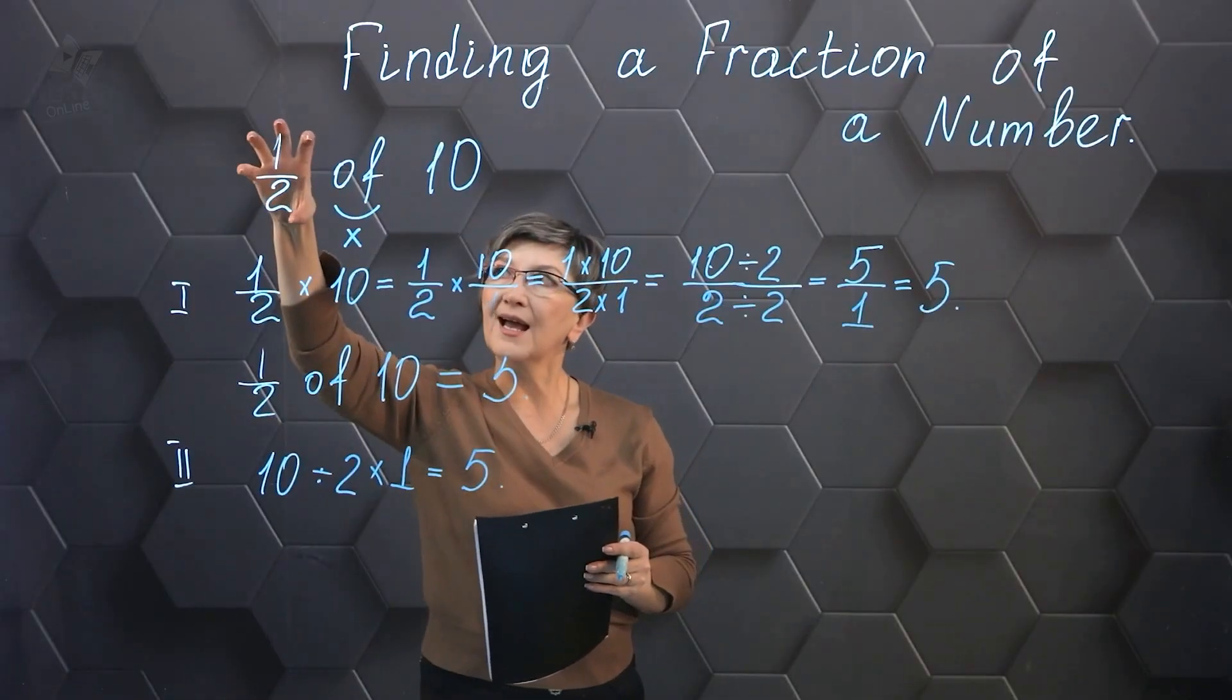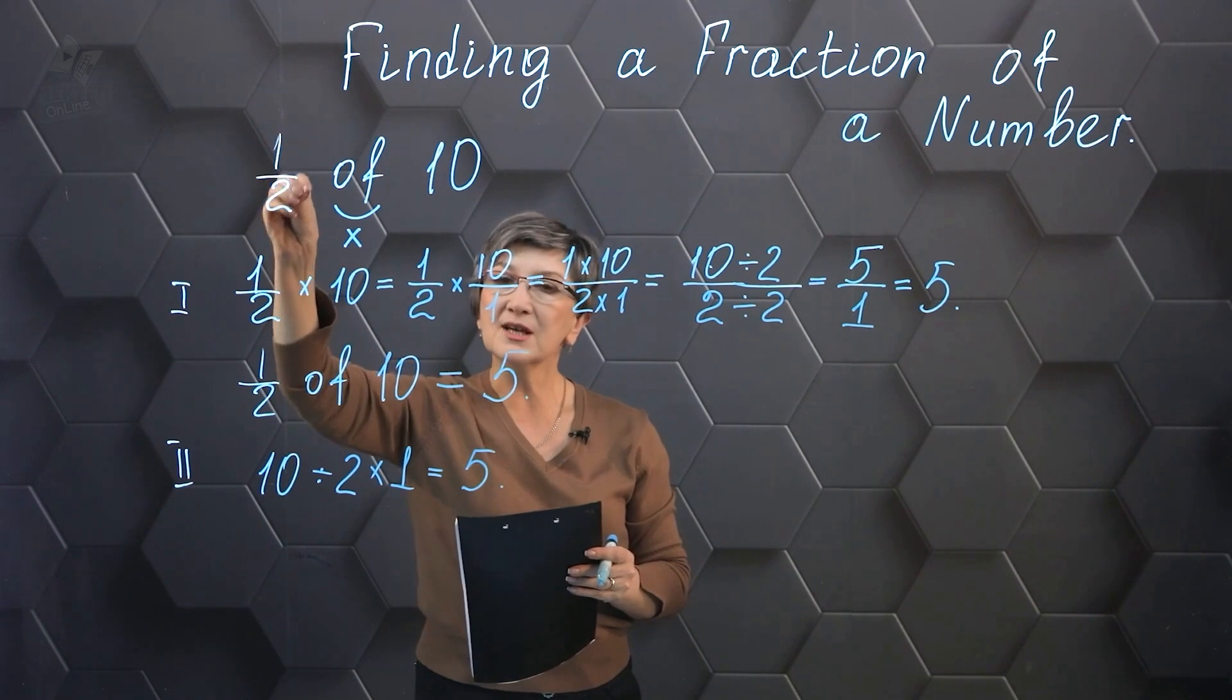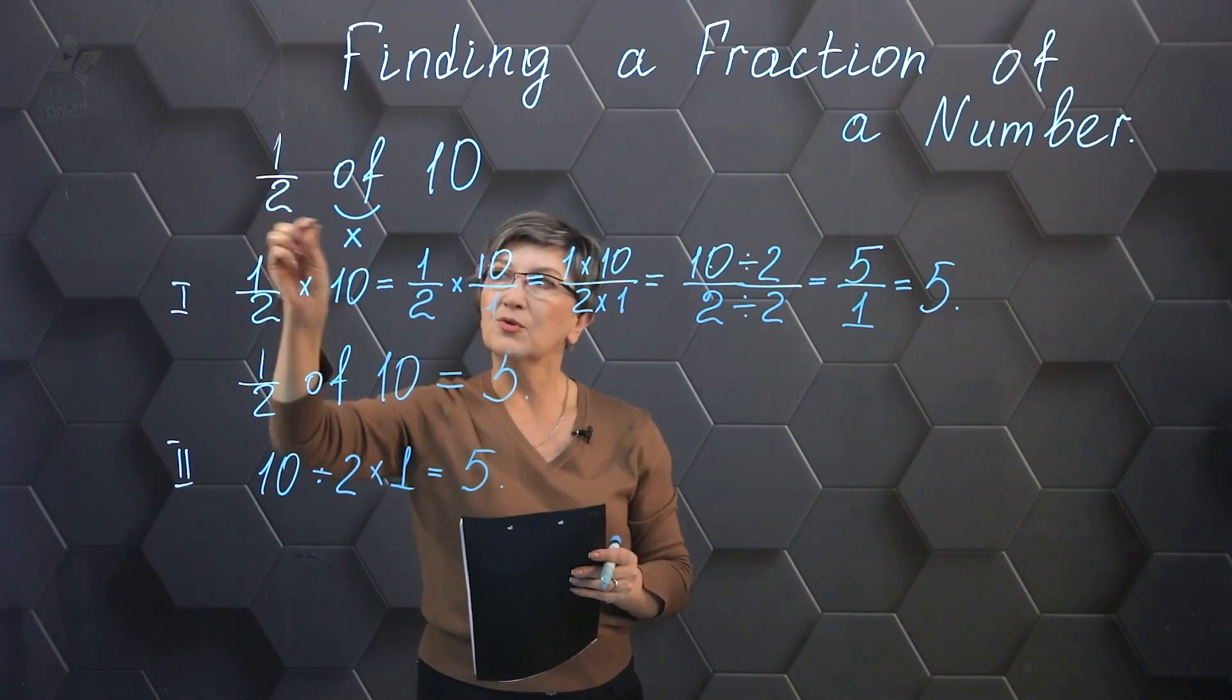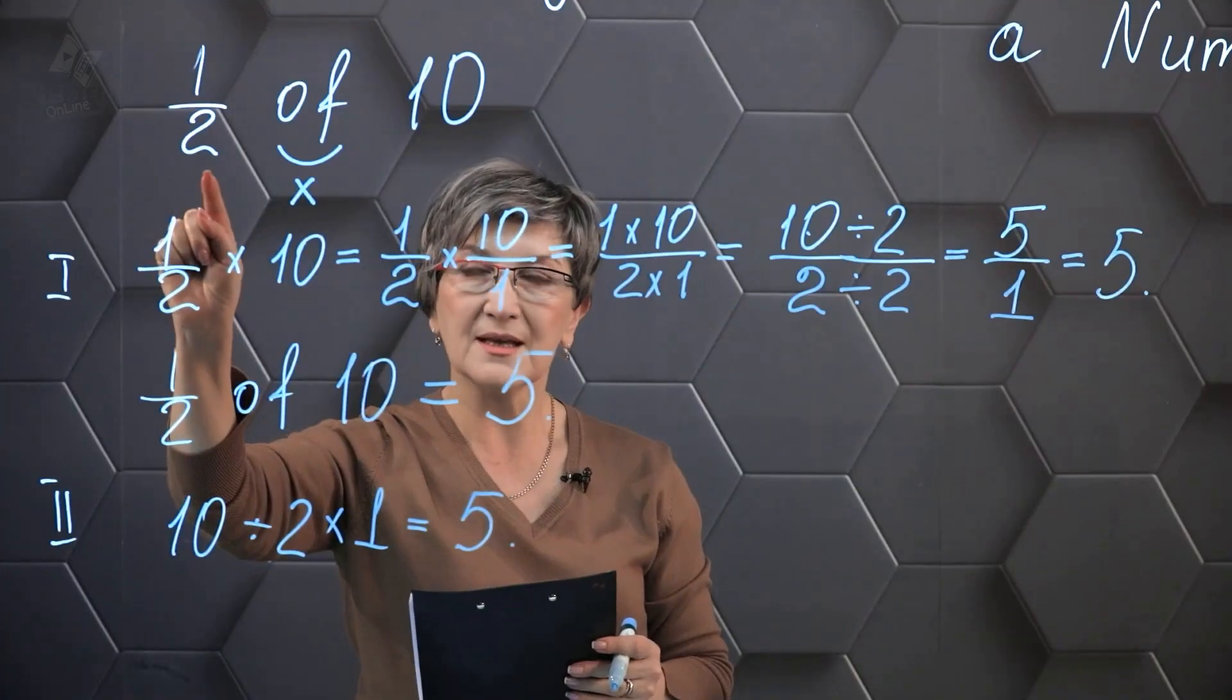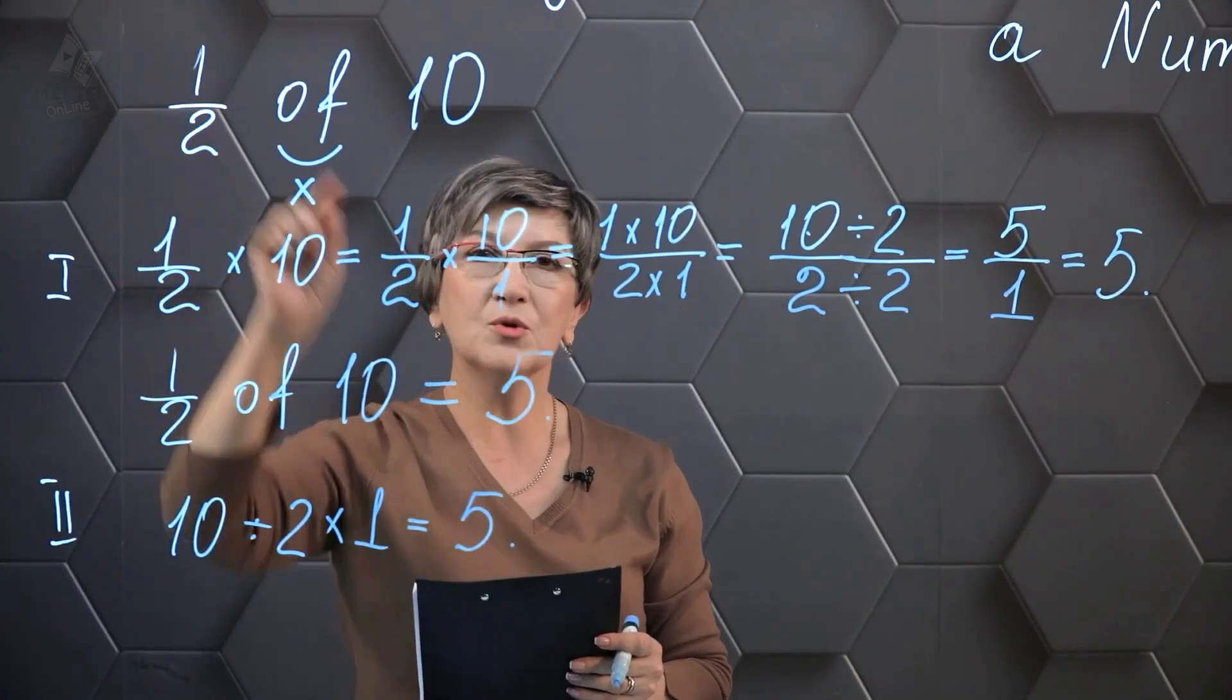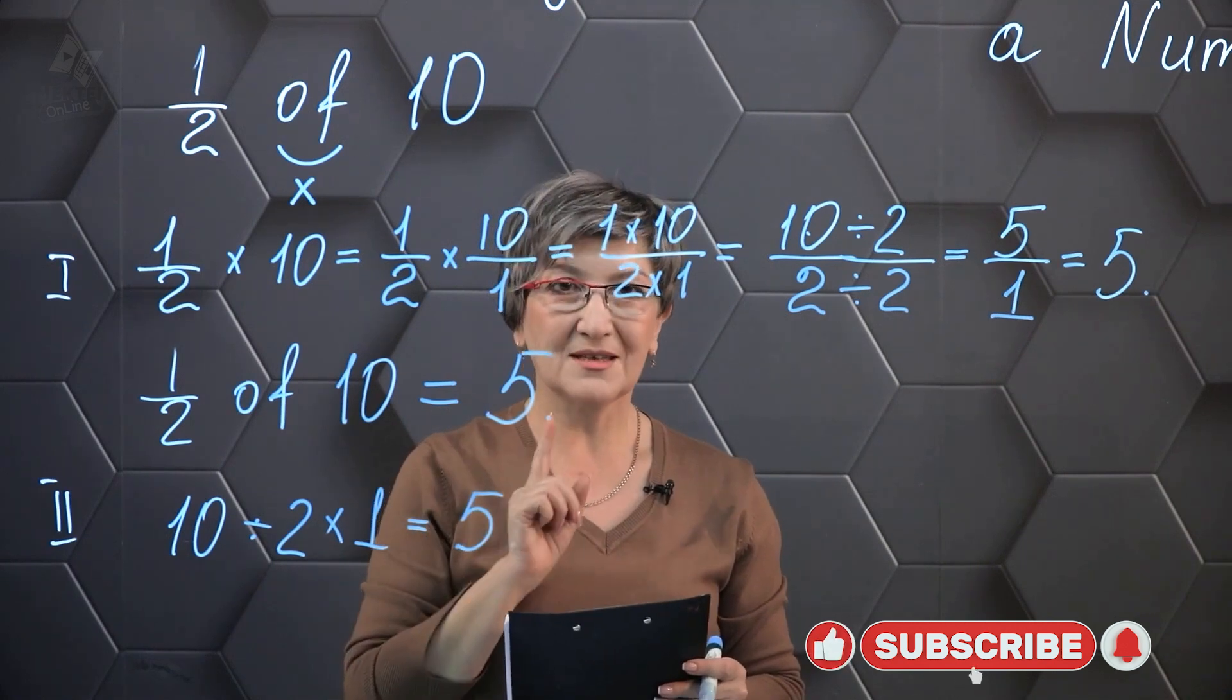Why? Because half is 1 part out of 2 parts, which means it's a fraction with a numerator of 1 and a denominator of 2. To calculate the value, we divide 10 by 2 into 2 equal parts, then multiply the quotient by 1. As a result, we obtain the final value of 5. Using this algorithm, you can find the fraction of a number.